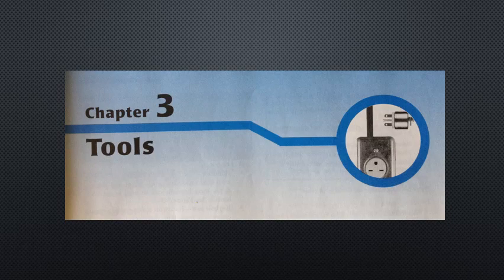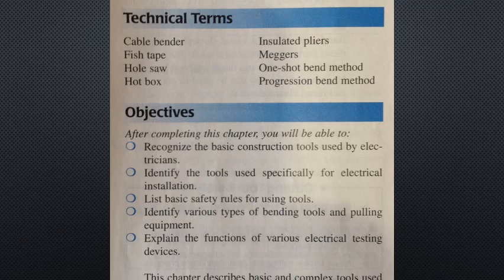Chapter 3: Tools. Technical terms encountered in this chapter are cable bender, fish tape, hole saw, hot box, insulated pliers, meggers, one-shot bend method, and progression bend method. Objectives are to recognize the basic construction tools used by electricians, identify tools used specifically for electrical installation, list basic safety rules for using tools, identify various types of bending tools and pulling equipment, and explain the functions of various electrical testing devices.